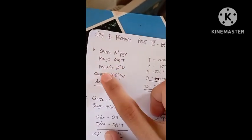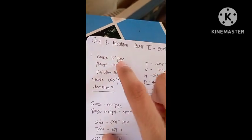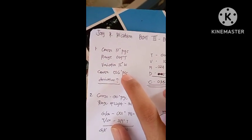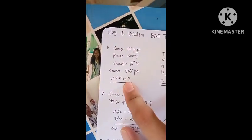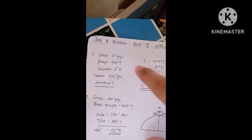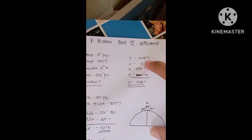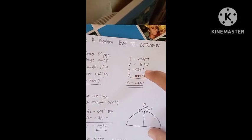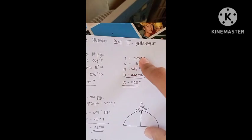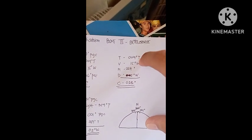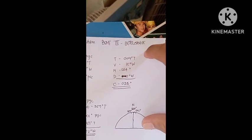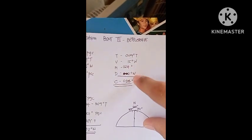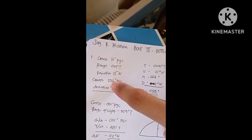We have a given course range, variation, and course. This is the course of gyro compass and P is the deviation. The deviation is missing, so we're going to use the uncorrecting method. The true course is 009 degrees true, variation is 15 degrees west, and magnetic is 024 degrees. We're going to add because uncorrecting goes from true to compass — west is plus and east is minus.